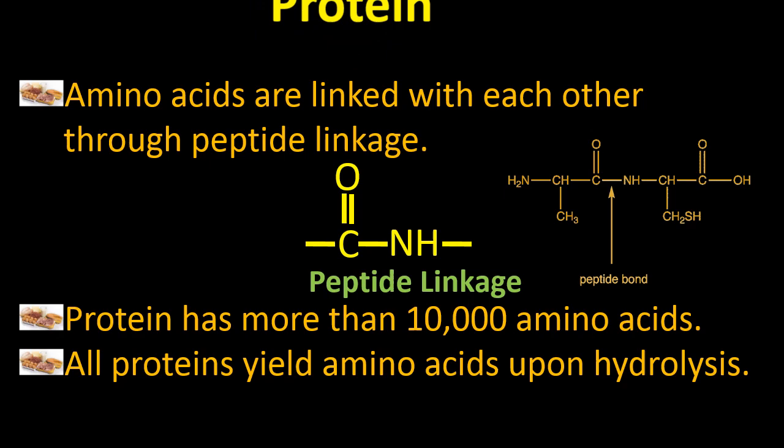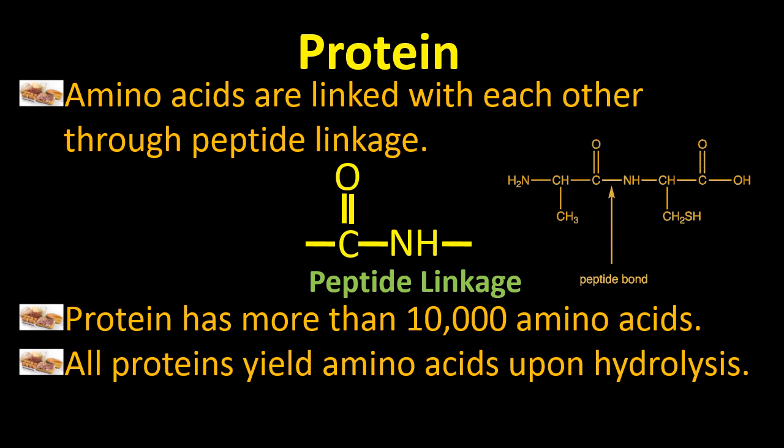The amino acids are linked with each other through peptide linkage. This is a very important concept — a common short answer question and MCQ that comes in exams: how do amino acids join together to give us protein? The answer is the peptide bond, formed when two amino acids come close to each other.